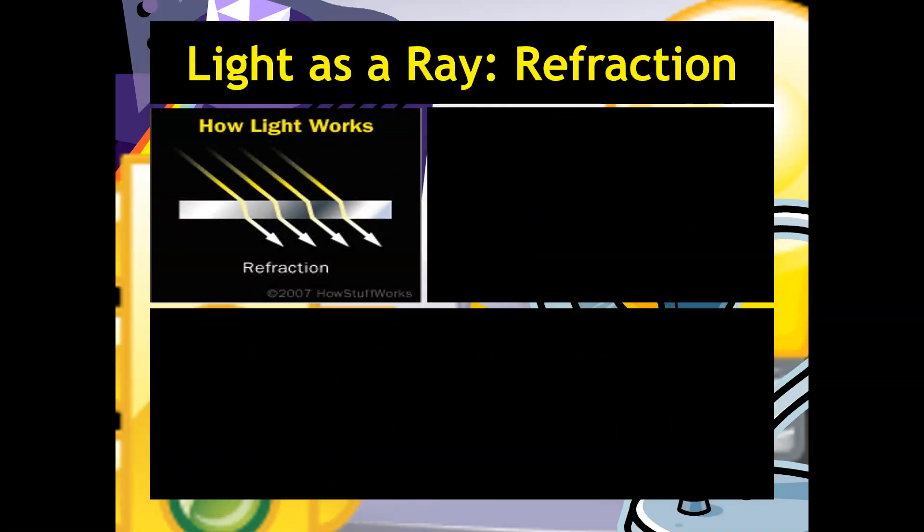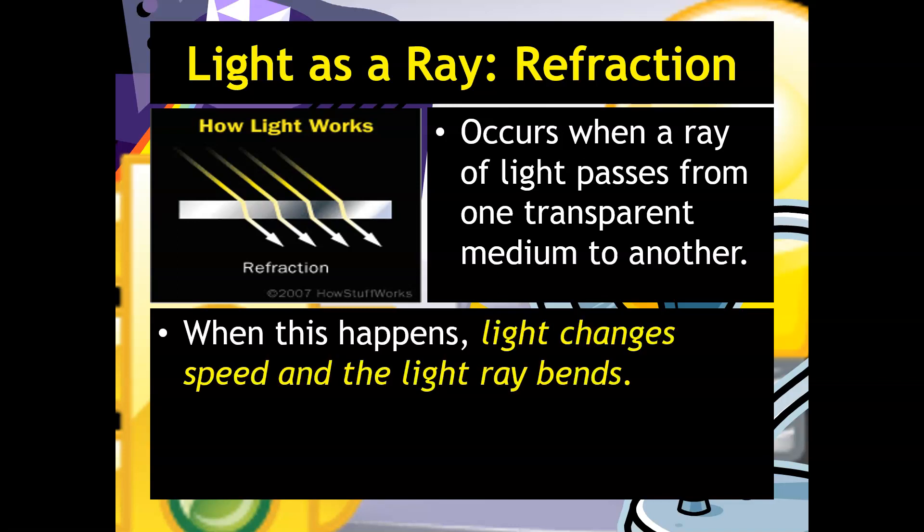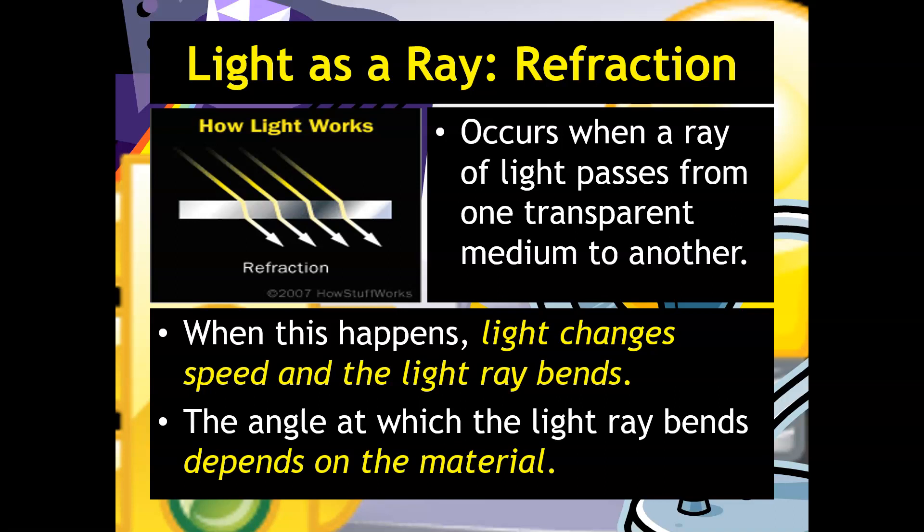When we talk about refraction, we're really talking about the ability for light to pass through an object. And this occurs whenever it goes from one, what we say, transparent medium to another. So the medium is obviously the object that it's passing through. And when this happens, light changes speed and the light ray will bend. The angle at which it bends obviously depends on the type of material that it's going through.